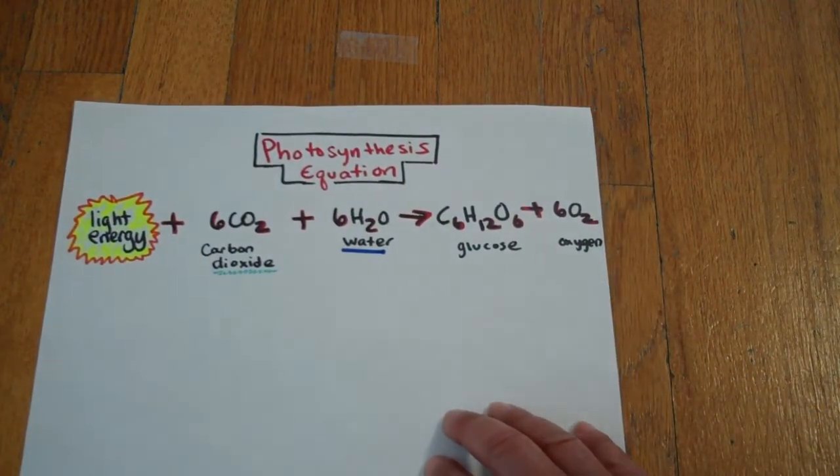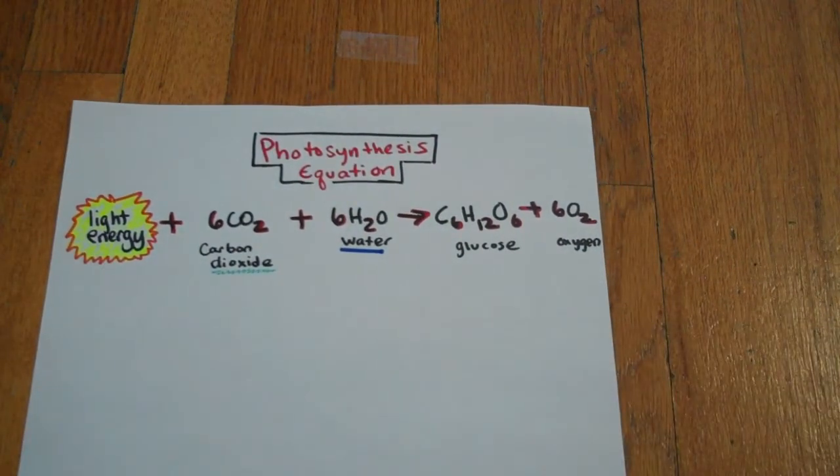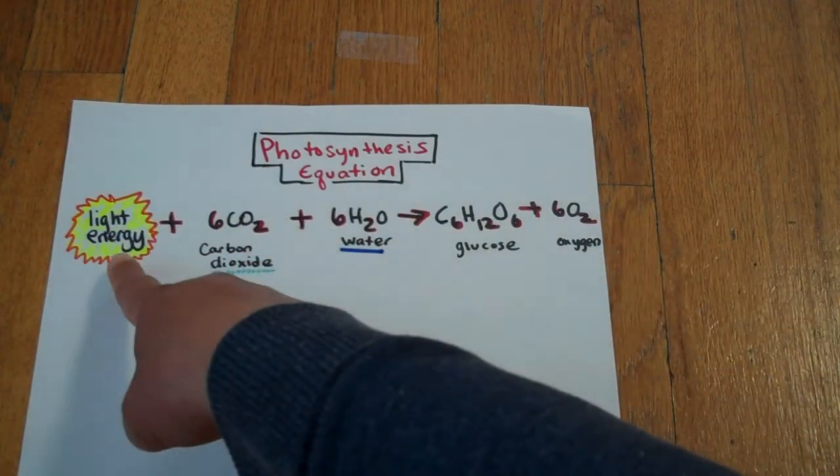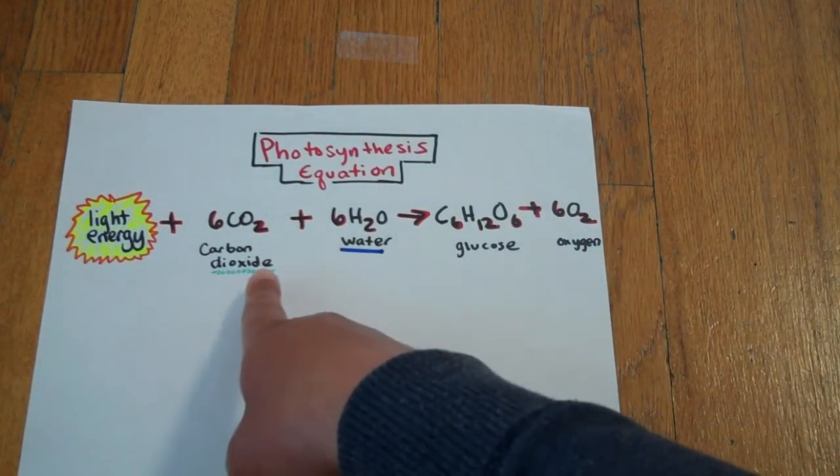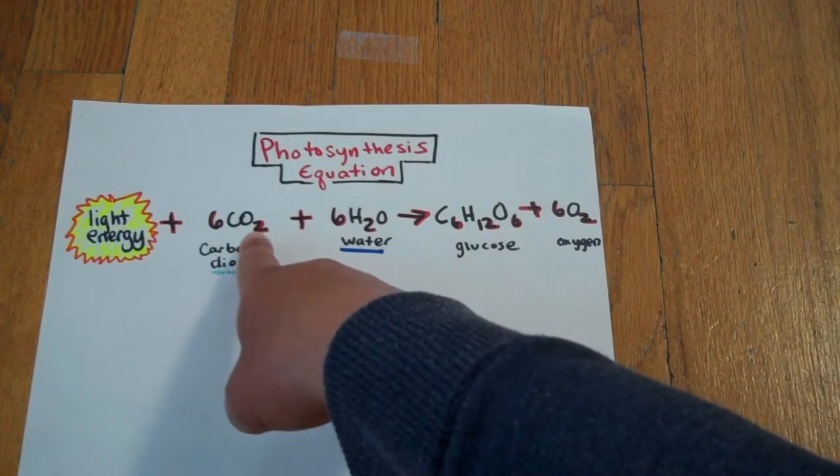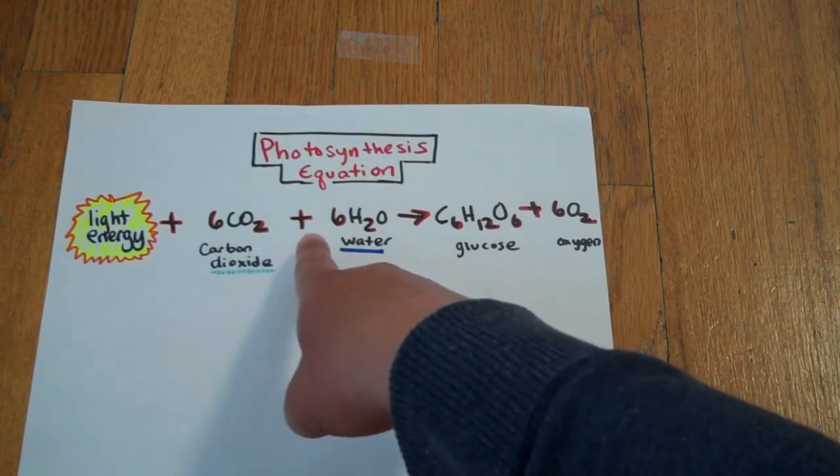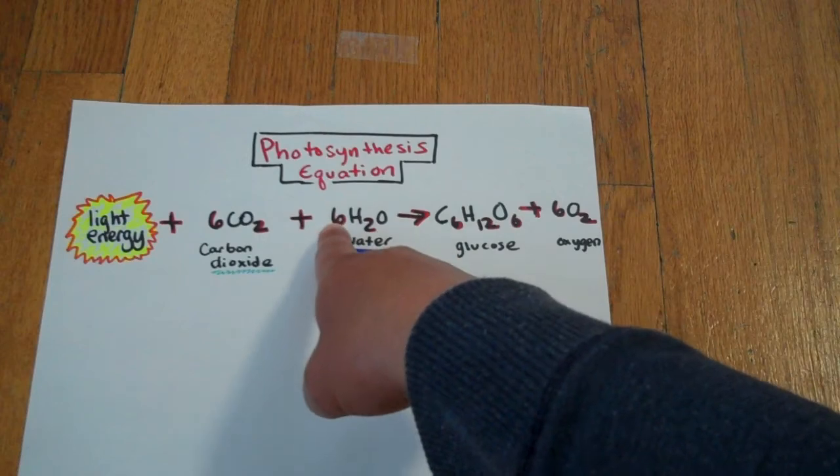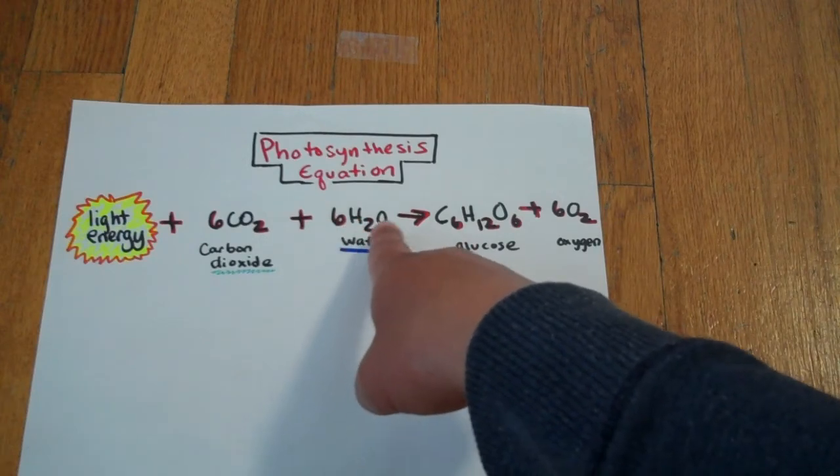Here it is in the form of a chemical equation. This is the photosynthesis equation: light energy plus carbon dioxide—and there's six carbon dioxide, CO2—plus water. There are six molecules of water, H2O.